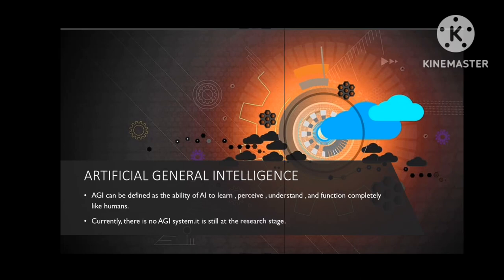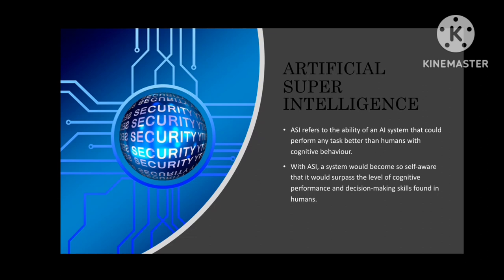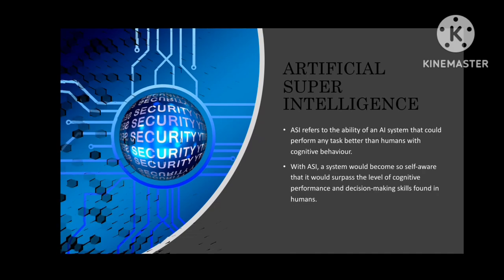The third and last classification is Artificial Super Intelligence, shortly called ASI. ASI refers to the ability of an AI system that could perform any task better than humans. With ASI, a system would become so powerful that it would surpass the level of complex performance and decision-making skills found in humans.